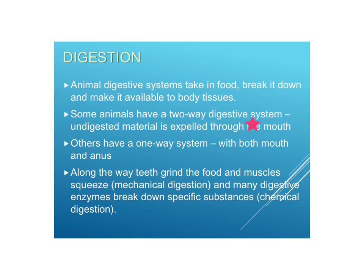Some animals have a two-way digestive system — undigested material is expelled through the mouth. They take in food by the mouth, digest it, and whatever is undigestible goes back out the same hole. That's not efficient because you can only eat once you're done digesting. Other animals, such as us, have a one-way system with a mouth and an anus — we can continue eating without stopping to finish digesting. Along the way we have teeth that grind the food — we call that mechanical digestion. We also have digestive enzymes that break down specific substances — we call this chemical digestion. Both occur.